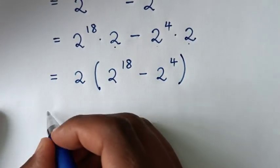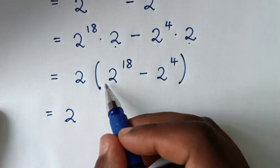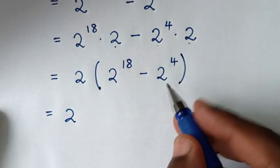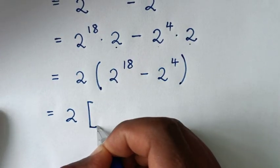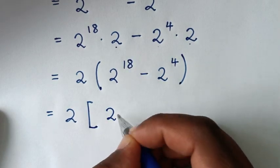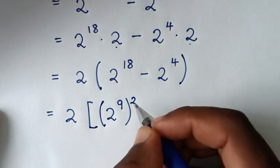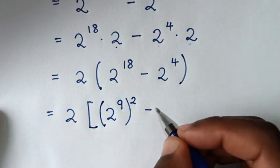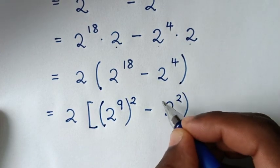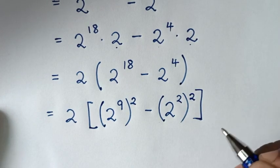In the next step, inside the bracket we'll make it in the form of a perfect square. So it will be: bracket (2 power of 9) squared, minus bracket (2 power of 2) squared.